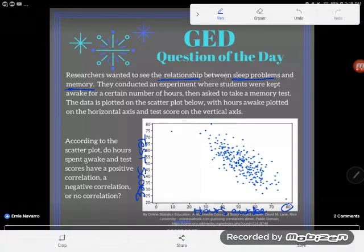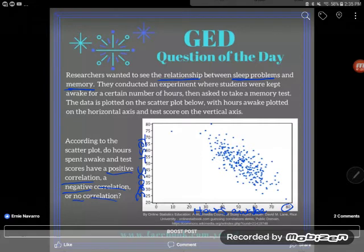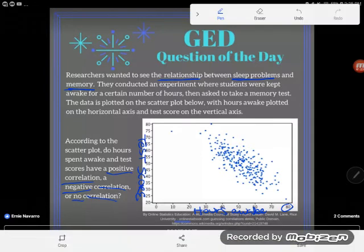Do hours spent awake and test scores have a positive correlation, a negative correlation, or no correlation? So a correlation is just a relationship between variables. It means that as one thing changes, another thing is affected. So we're trying to figure out if basically staying awake affects your memory.